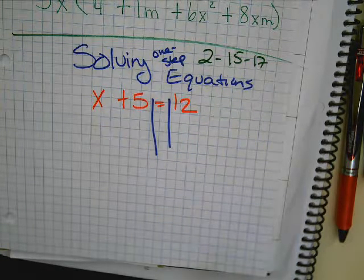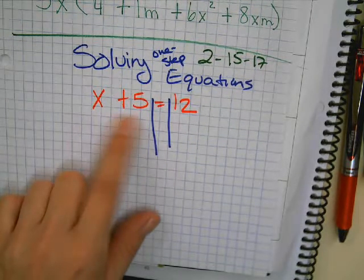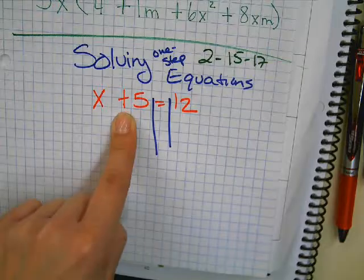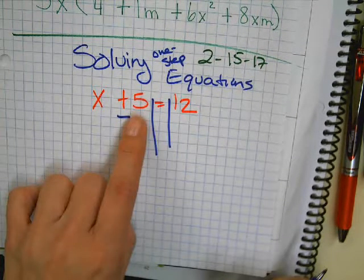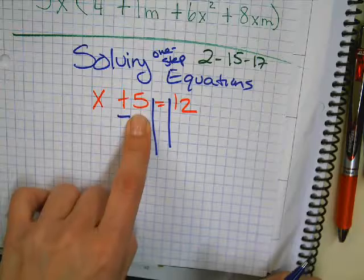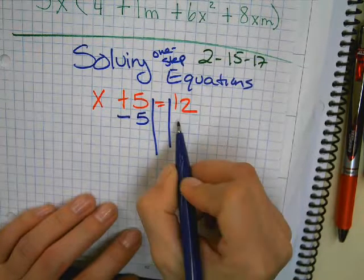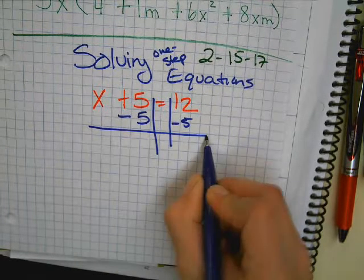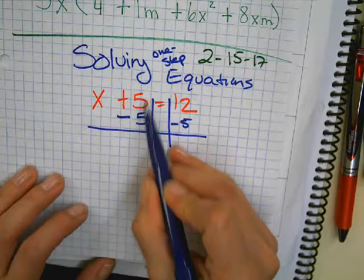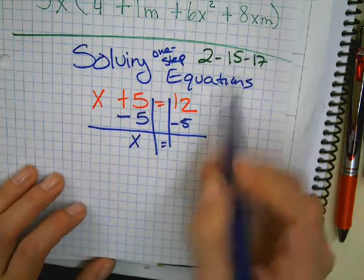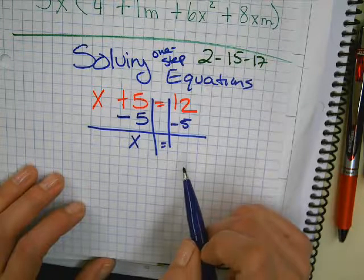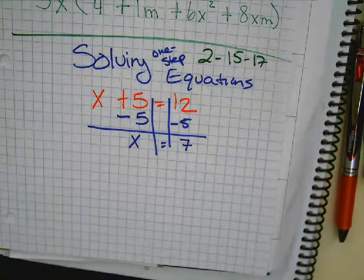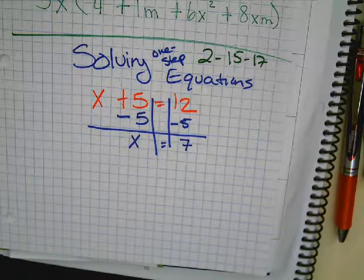Now, I'm going to ask you, what's the operation here? Addition. You're always going to do the opposite operation. So, what's the opposite of addition? Subtraction. So, you're going to subtract. Whatever number is here, you're going to subtract it. So, what do I subtract by? 5. Whatever you do to one side, you have to do it to the other side to keep it balanced.